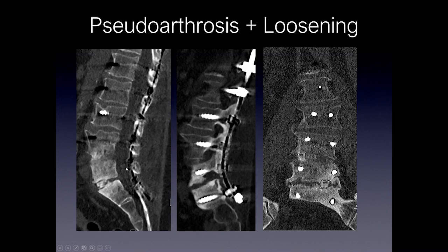Here's an example of failure of fusion resulting in motion. There's no fusion across the L5-S1 disc space, and this motion resulted in loosening of the screw. You can actually see lucency on the sagittal image around the screw, which is confirmed on the coronal. Typically you should see no lucency around screws. The lucency around the screws at L5 here is consistent with hardware loosening, and there is no bony bridging across that disc space.